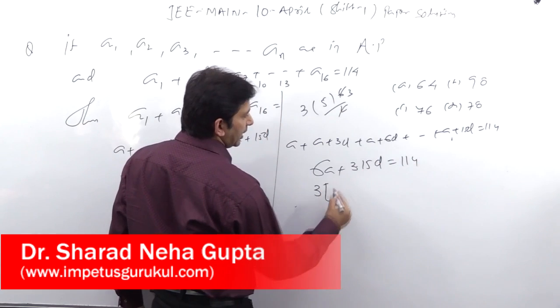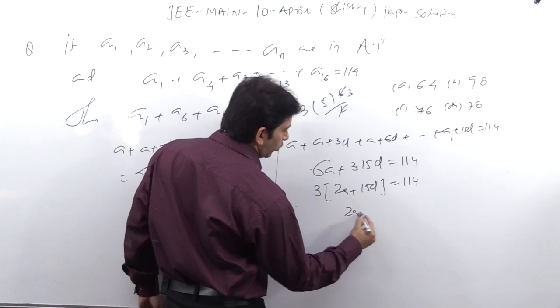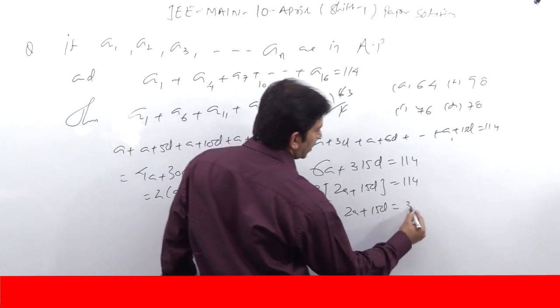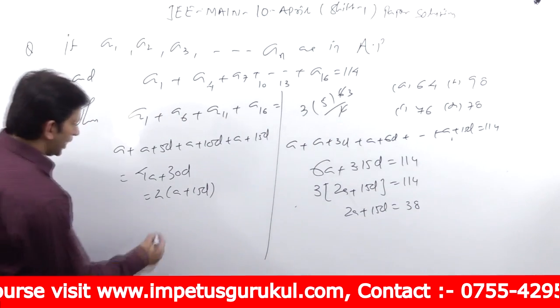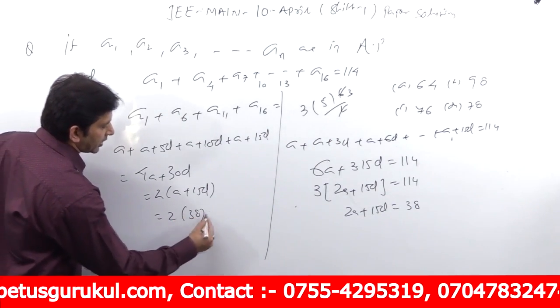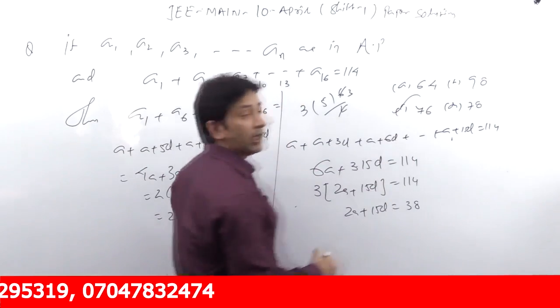Three common layer, so 2A plus 15D is equal to 114 by 3, 2A plus 15D is equal to 38. Then here we go take equation 2 into 38, this is 76. What a good question was, this answer was 76.